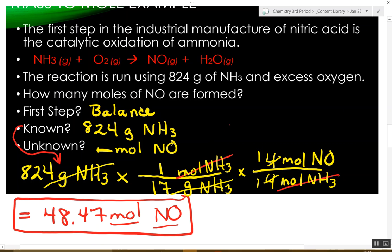Step two is multiplying by the inverse of the molar mass. Because what that does is get us from grams to moles. We're trying to get rid of grams to get to moles.